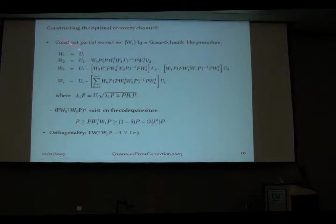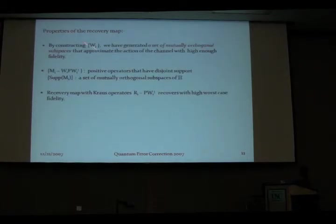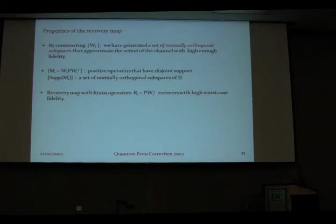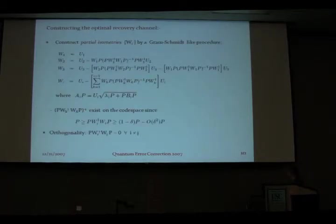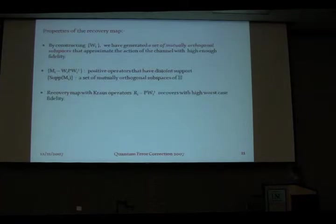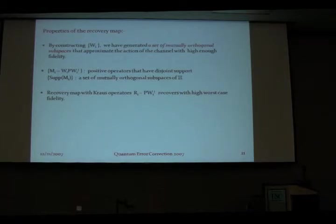At the end of the day, we have a set of WIs which are orthogonal in this sense, and so we can use them to construct a recovery map. The recovery Krauss operators are essentially the adjoints of these WIs followed by a projection on the code space, and we showed this recovers with high worst-case fidelity. What we are doing by constructing these WIs is generating a set of mutually orthogonal subspaces. If you write down the action of each WI on the code space, this is a set of positive operators with disjoint support — because of the orthogonality condition. The support of these MIs is a set of mutually orthogonal subspaces which approximate the action of the channel to a high degree of fidelity, which is why we obtain high worst-case fidelity of recovery.